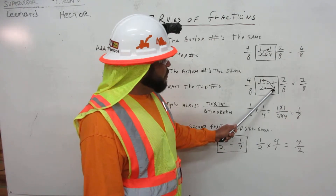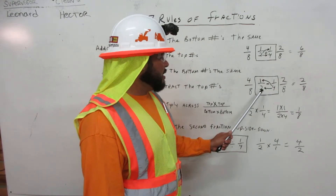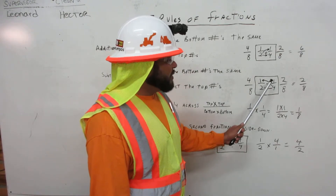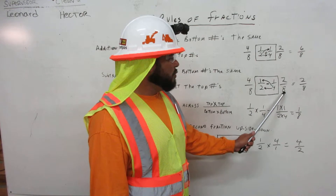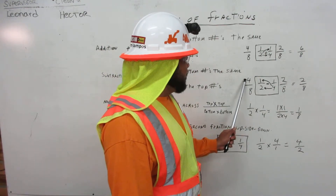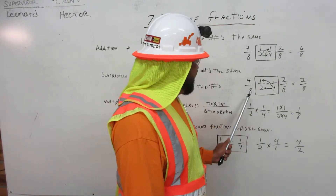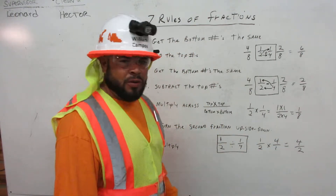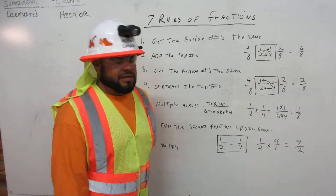So now we have four times one equals four, and four times two equals eight. Then we have two times one equals two, and two times four equals eight. So now we're going to subtract: four minus two equals two, and we bring the eight over. And that's how you do all the subtraction on fractions.